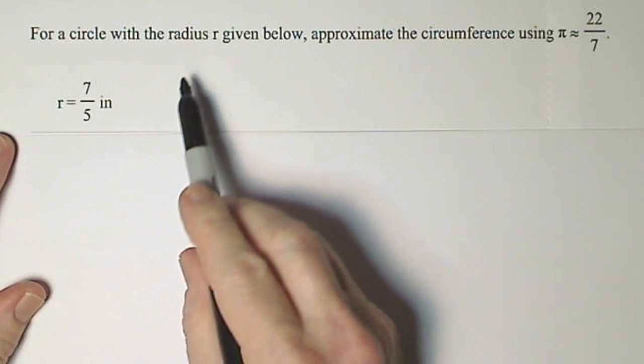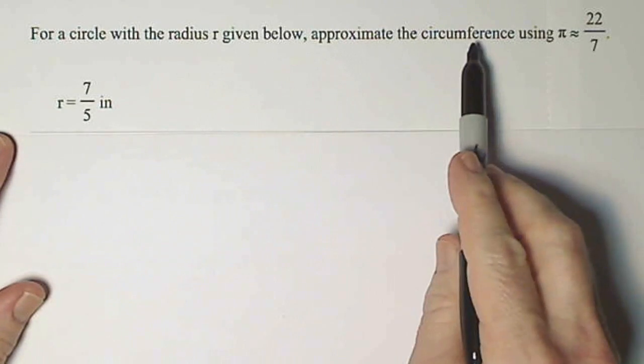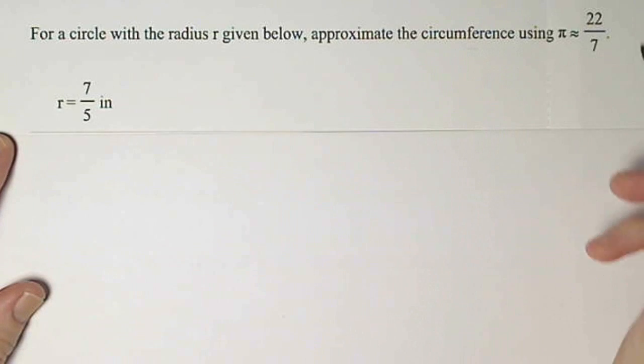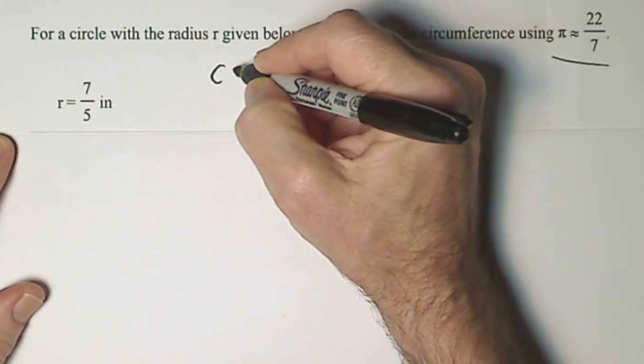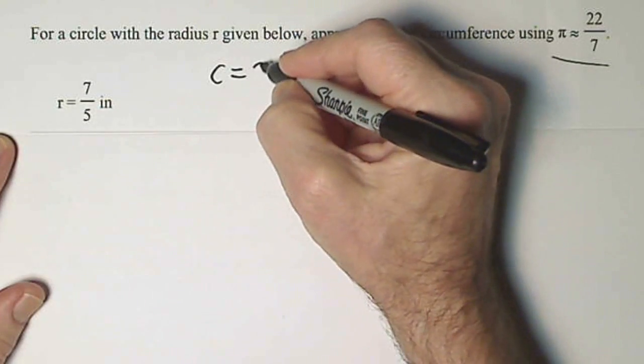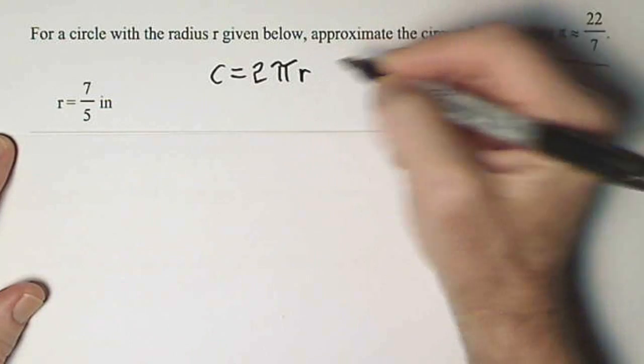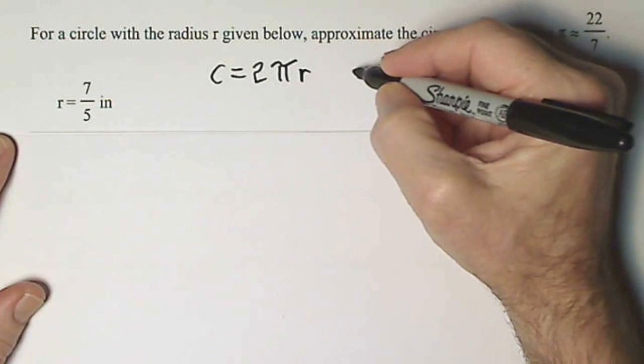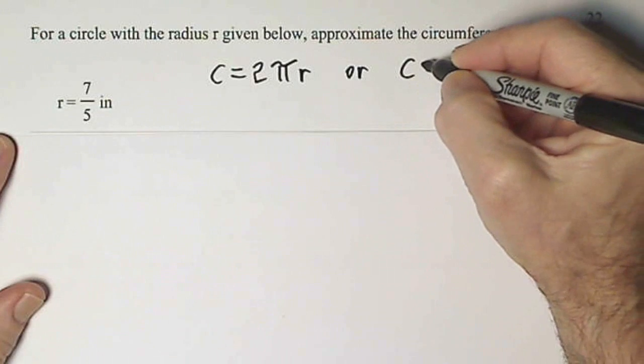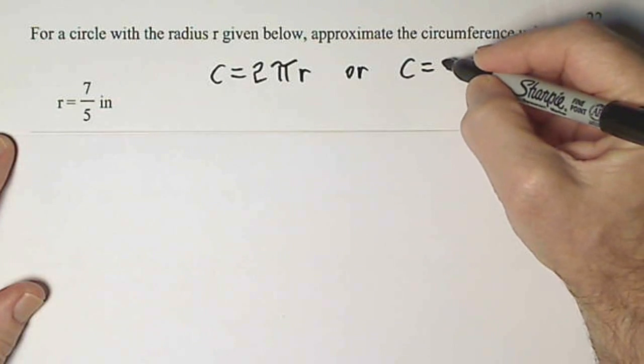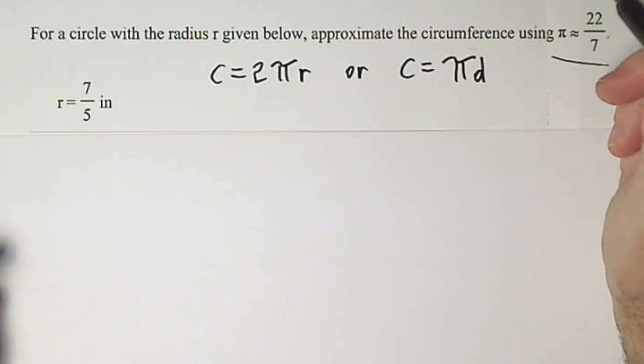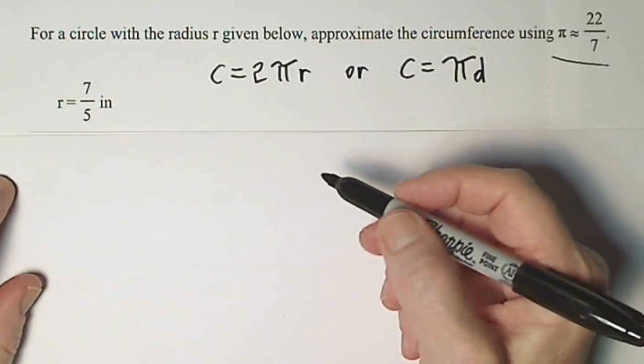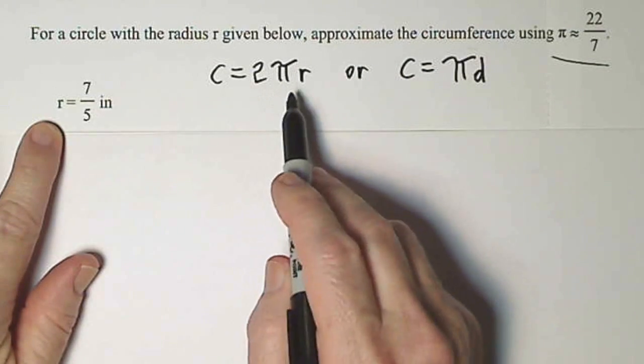For this circle, they want us to approximate the circumference. And they want us to use pi as 22/7. The formula for the circumference of a circle can be written two ways. It's either 2 times pi times the radius. Or circumference can also be found by multiplying pi times the diameter. Since they've given us the radius, we'll use this formula.